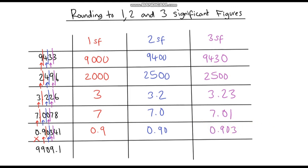Let's do one more. Our first significant figure is the 9. We look at the next digit — that is greater than 5, so this rounds up to a 10, making the number 10,000; we need to add those extra zeros. For two significant figures, the second significant figure gives us the next digit — we look at the 0, which is less than 5, so this stays at 9,900. For three significant figures, the 0 is our third significant figure. We look at the 9 next to it — that is greater than 5, so this rounds up to a 1, making the whole number 9,910.